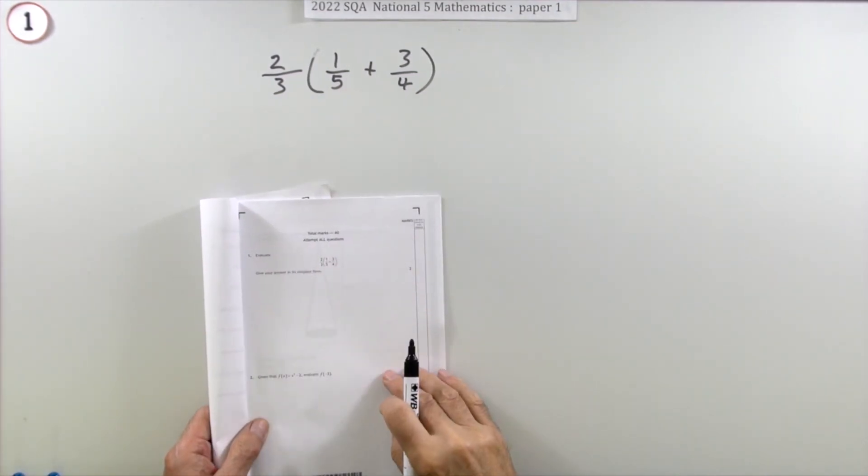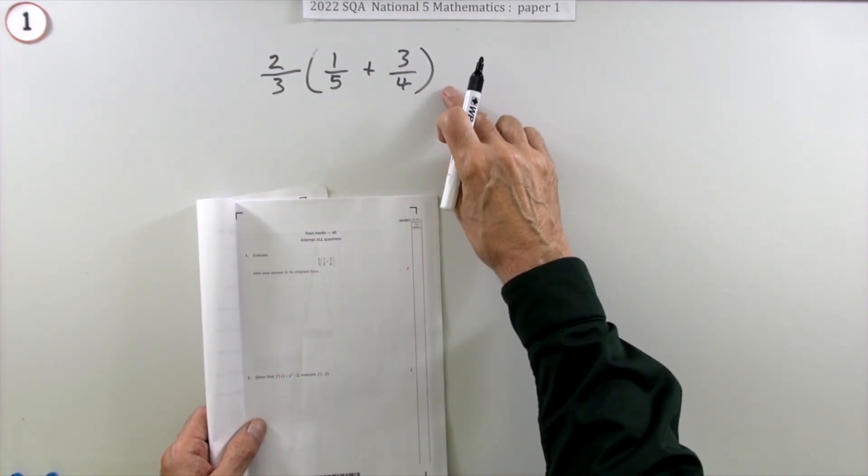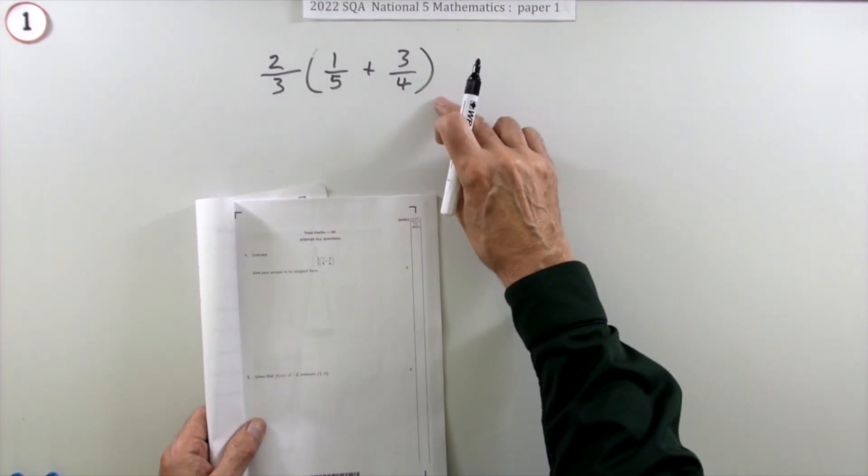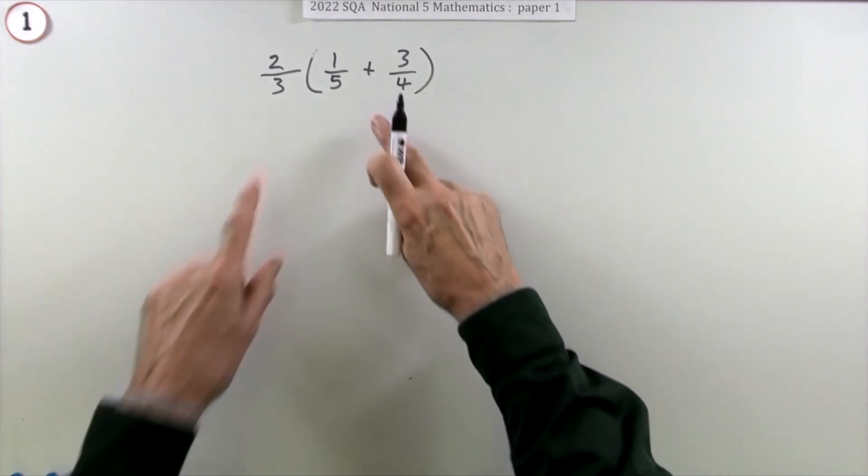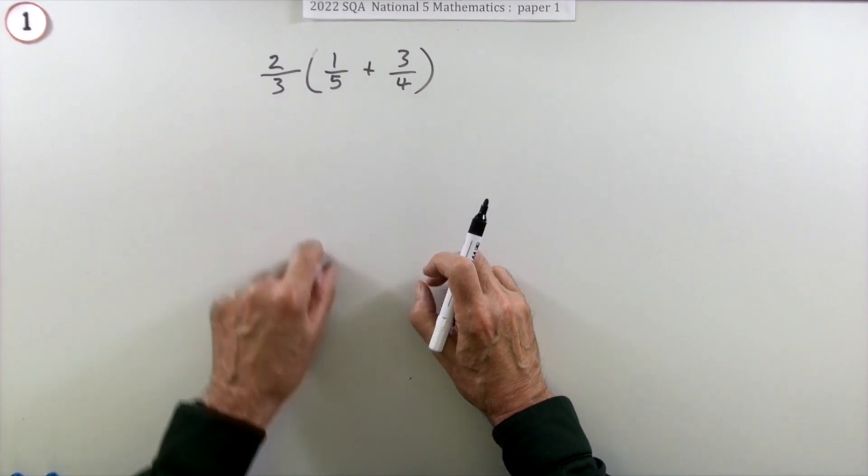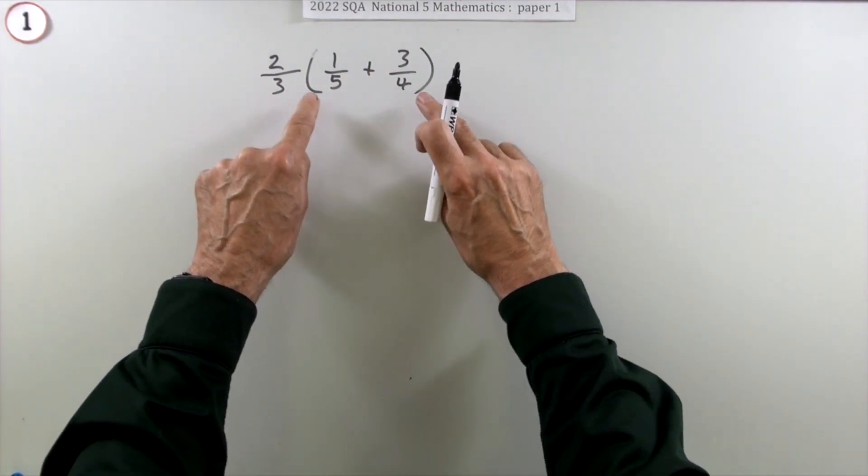Number one, the first question in the 2022 National 5 paper one, just a little two mark question on fractions. Carry out this calculation giving your answer in its simplest form. Well, there's two parts here: there's an addition of fractions and there's a multiplication of fractions.